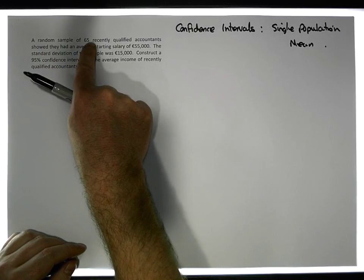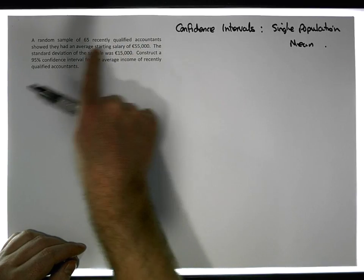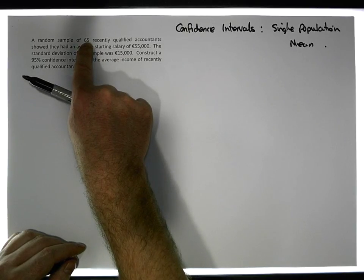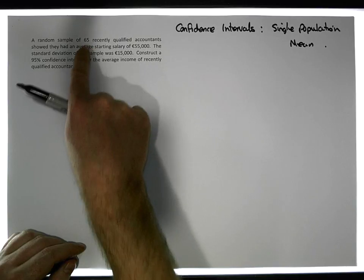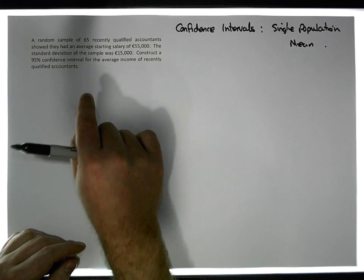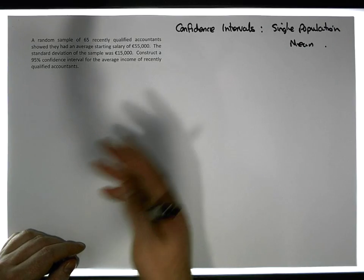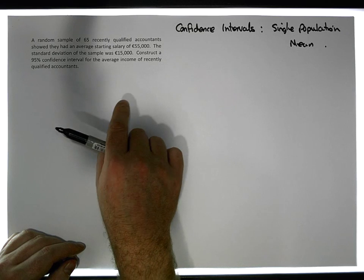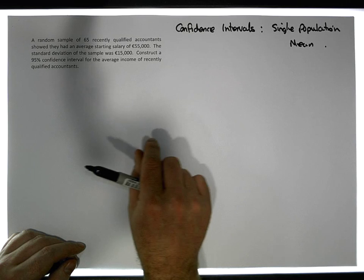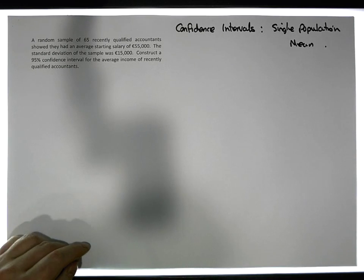What we have is a sample of 65 recently qualified accountants. We know the sample mean is €55,000 and the sample standard deviation is €15,000. These 65 accountants have been drawn from a larger population which has its own mean — the average starting salary for all recently qualified accountants. What we'd like to do is bound that population mean both below and above.